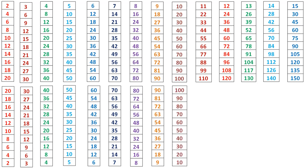10 times 10 is 100, 10 times 9 is 90, 10 times 8 is 80, 10 times 7 is 70, 10 times 6 is 60, 10 times 5 is 50, 10 times 4 is 40, 10 times 3 is 30, 10 times 2 is 20, 10 times 1 is 10.